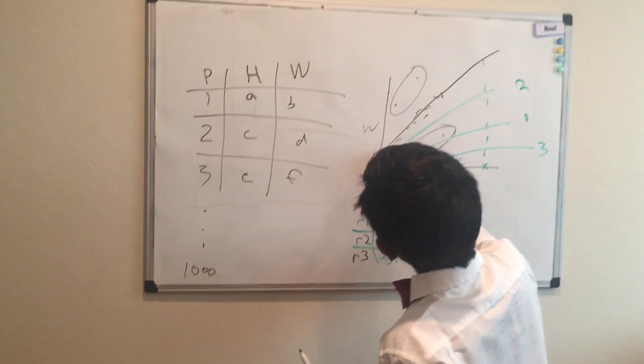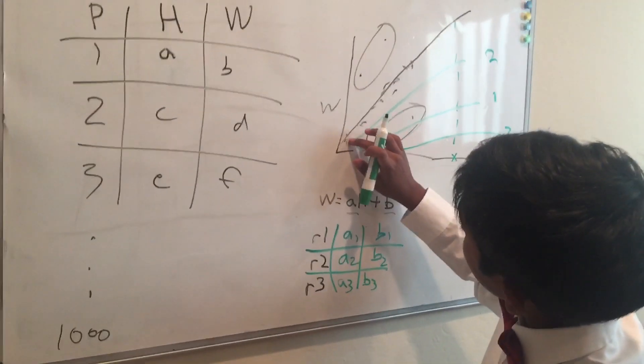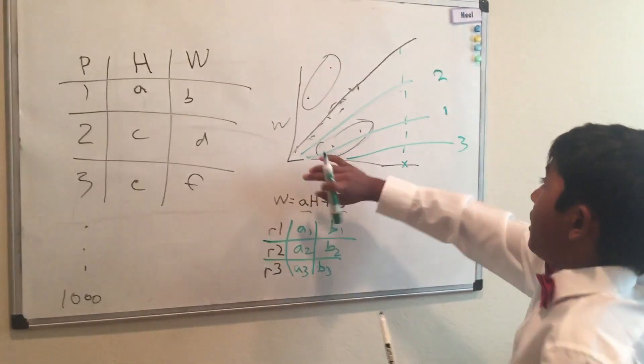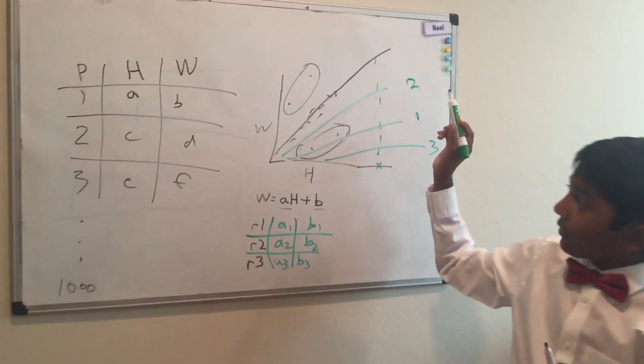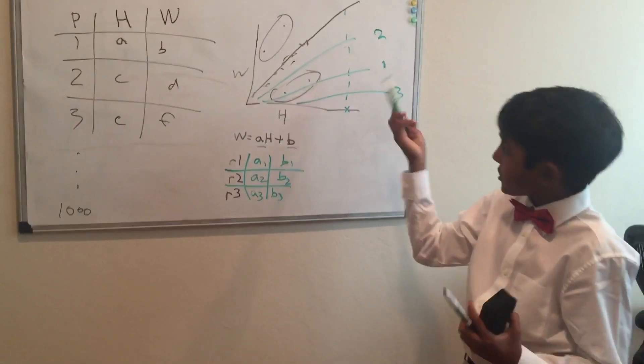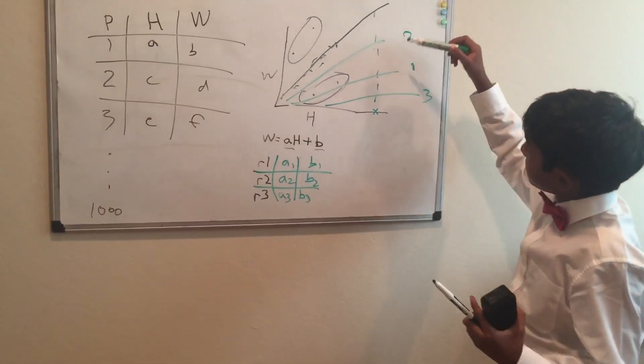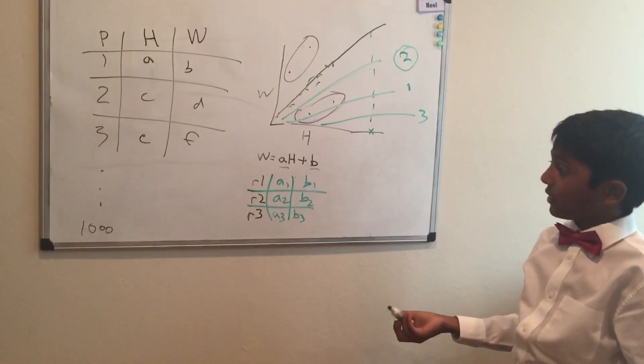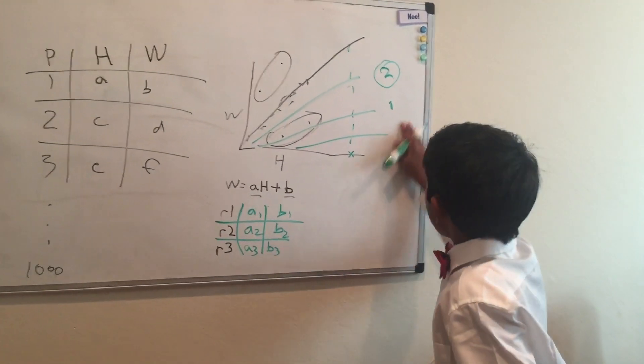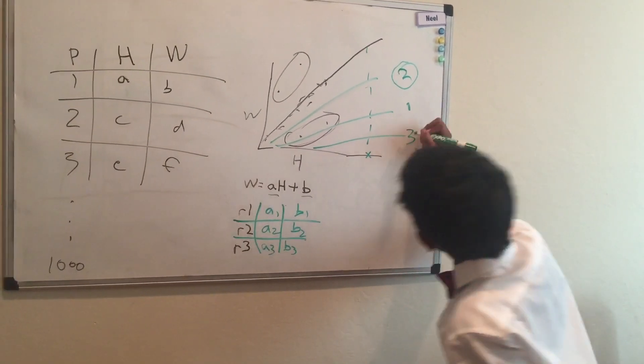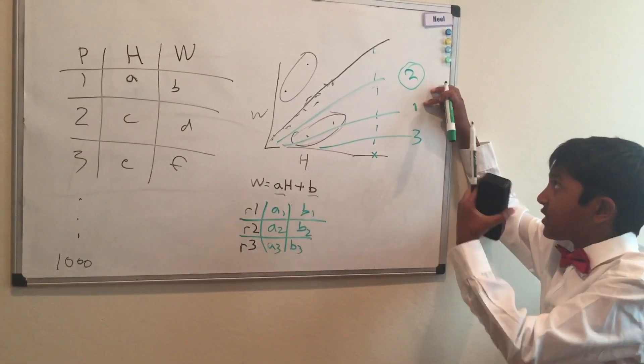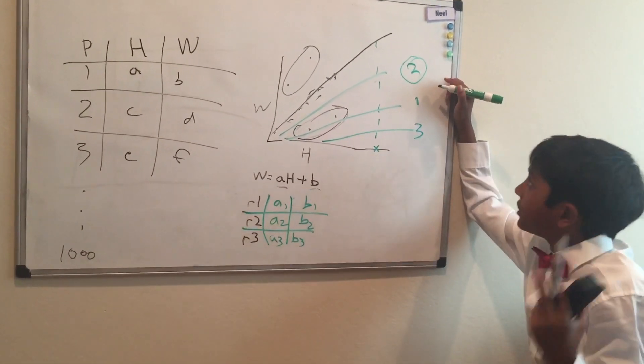Which one's the closest? You figure out the distance between the given weight for a certain height of all of these, and you figure out the distances from the actual values. Whichever average is lowest, whichever the average difference is lowest, is the best. In this case, it's two. The problem with this though, is that three is the worst, and the first one is the second best, and the second one you generate is the best.